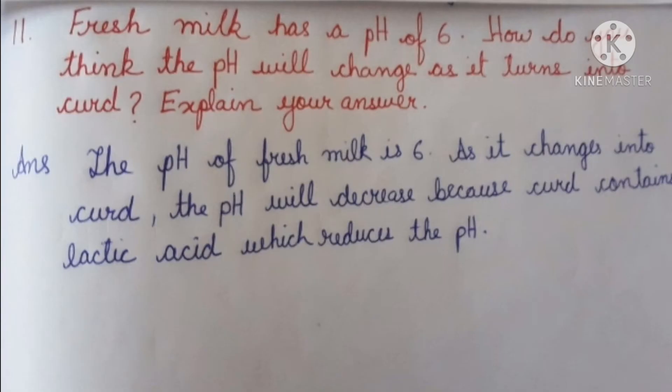Question 11: Fresh milk has a pH of 6. How will the pH change as it turns into curd? The pH will decrease because curd contains lactic acid, which reduces the pH.